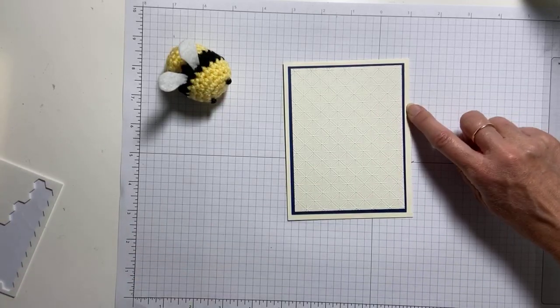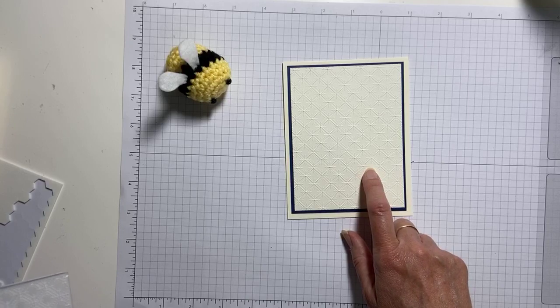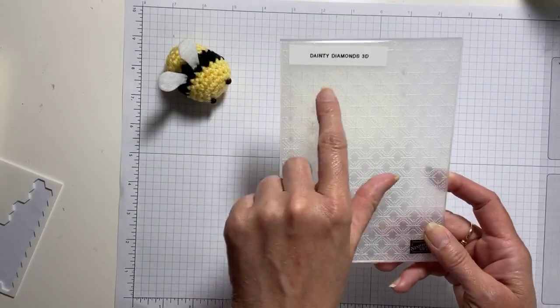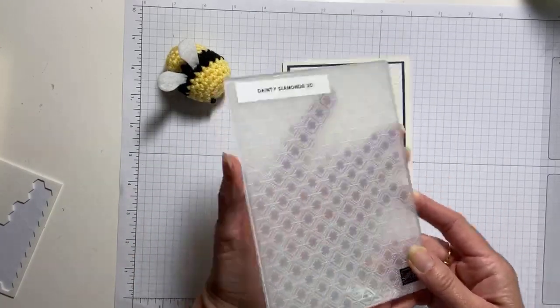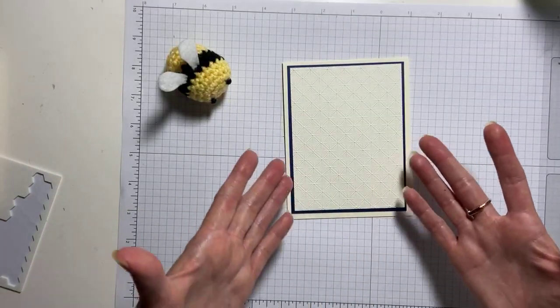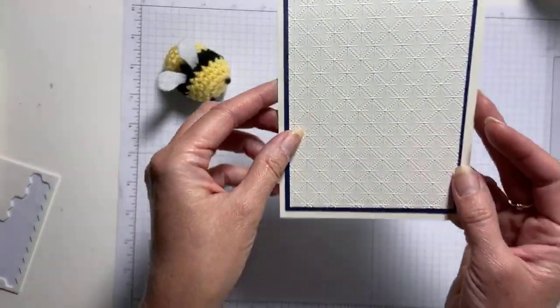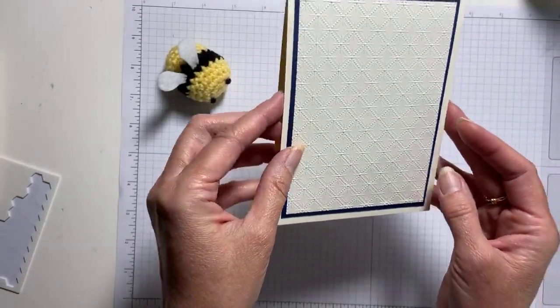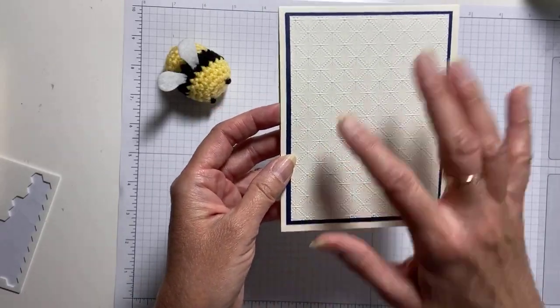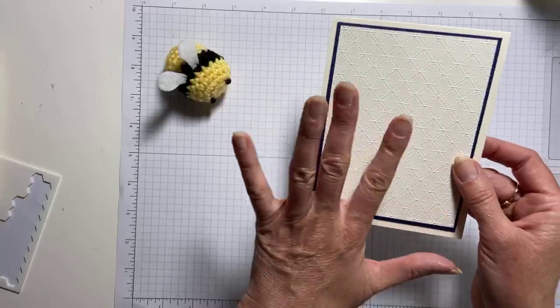I have a layer of Night of Navy, and then I have a layer of Very Vanilla. And I embossed it with the Dainty Diamonds 3D Embossing Folder. This is a great embossing folder. I don't like really busy embossing folders. And so, even though this has plenty of pattern, can you see? I've got a glare this morning. It's very subtle, actually, especially for a 3D. So, I really like this.